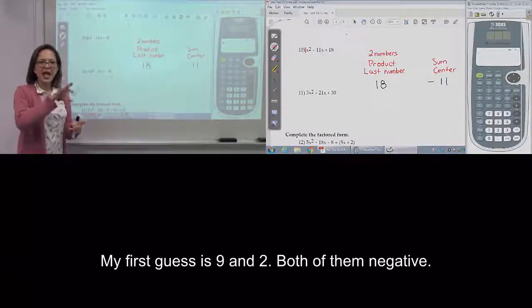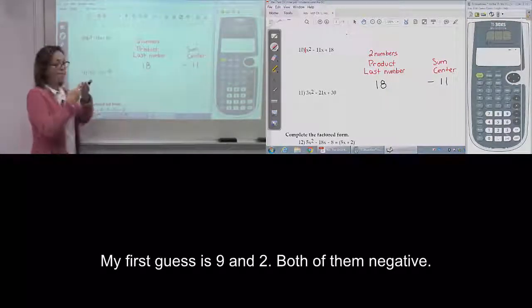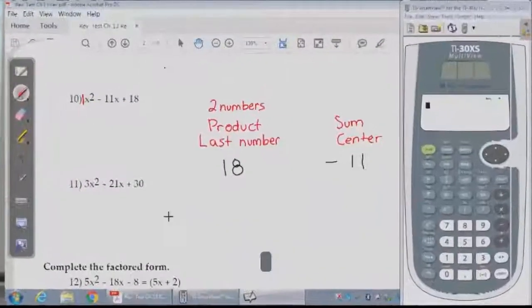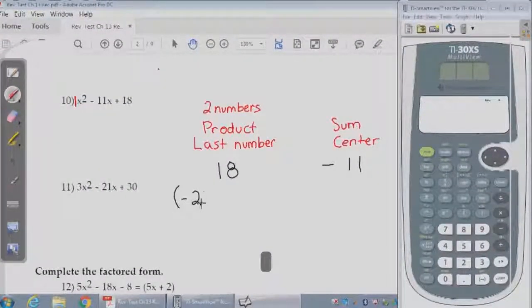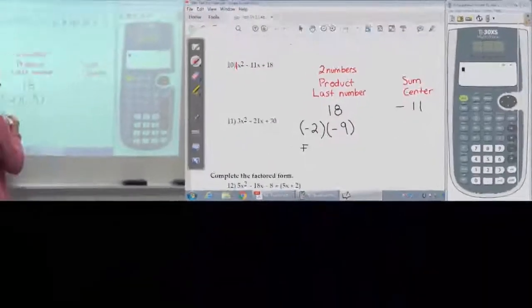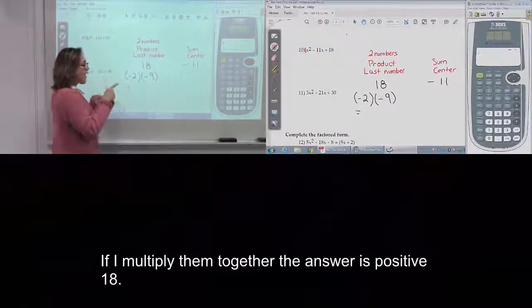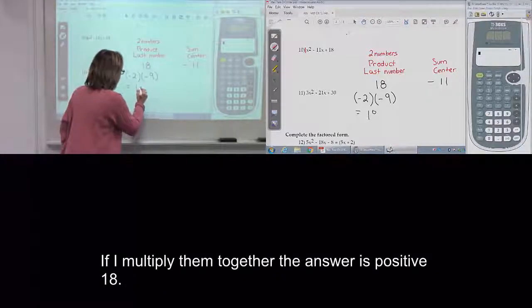My first guess is going to be 9 and 2, both negative. If I multiply this together, the answer is going to be a positive 18.